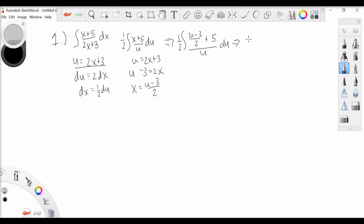We can rewrite this in the following way: one-half the integral of u minus 3, now plus 10 from multiplying through by 2, divided by 2, over u du.